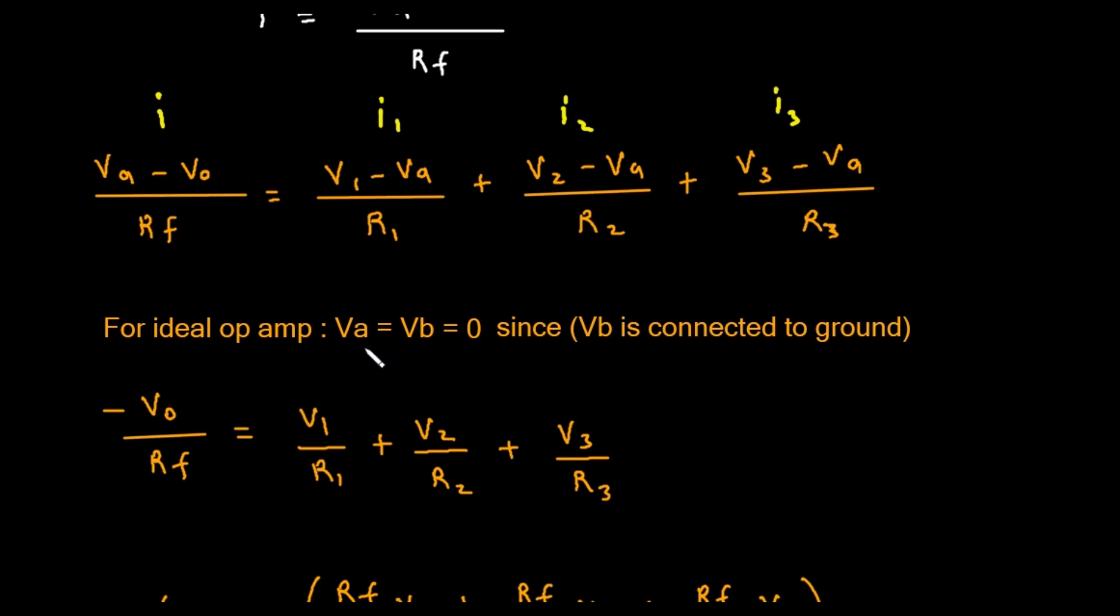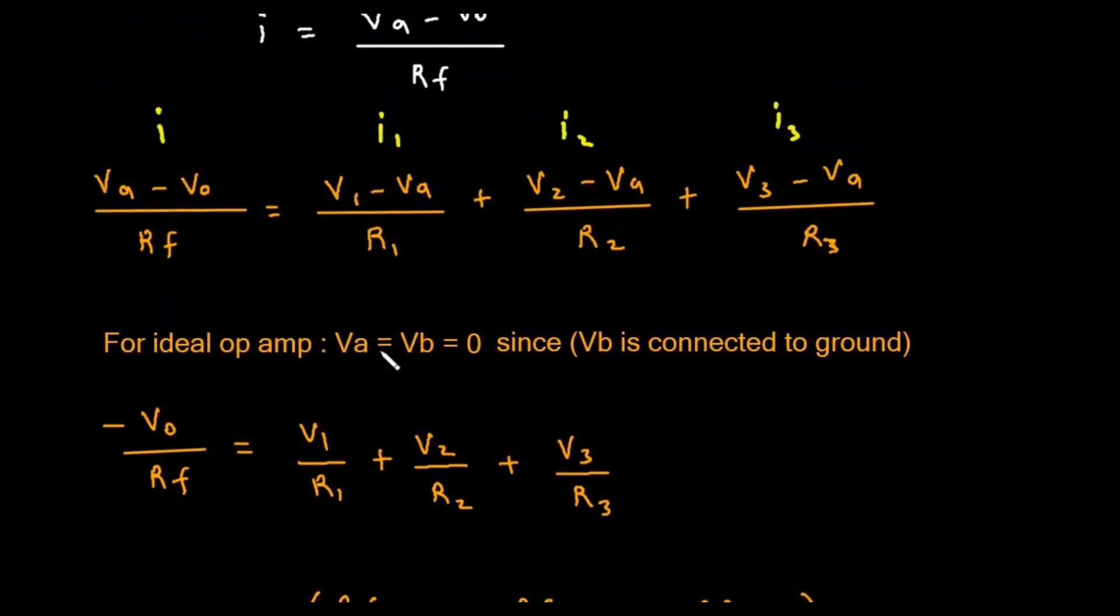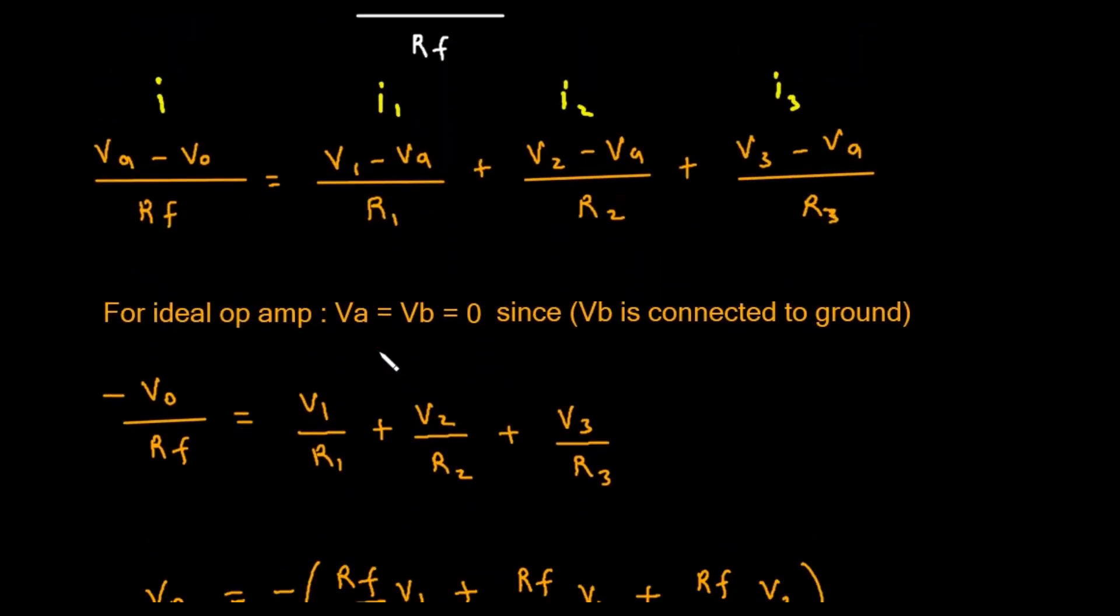Golden rule number one: no current flows into the op-amp's input terminals. This is why all the incoming currents, I1, I2, and I3, had to combine and flow out through the feedback path. Our first equation already uses this rule.